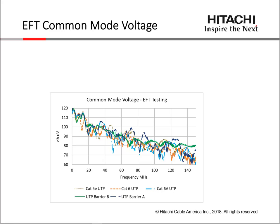This chart of common-mode voltage for UTP-type cables has the horizontal axis ranging from 0 to 150 megahertz and the vertical scale showing induced common-mode voltage on the pairs. What we found was that the coupling to all the cables was essentially the same — whether a barrier design, Category 6A, or Category 5E with very different lay lengths — the coupling was essentially the same across all cable designs. We believe this may be caused by near-field effects, which have different coupling characteristics compared to more distant radio frequency sources.